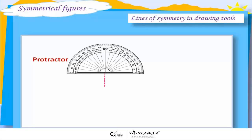Protractor. The number of lines of symmetry is 1.